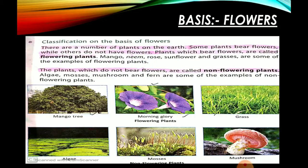Then we are coming on the basis of flowers — classification on the basis of flowers. We are having two categories. एक category जिनके ऊपर flowers उगते हैं, और एक वो category जिनके पास कोई flowers नहीं होते — वो non-flowering plants हो गए। Plants which bear flowers are called flowering plants — like mango, neem, rose, sunflower and grasses. And the plants which do not bear flowers are called non-flowering plants — like algae, mosses, mushroom and fern.